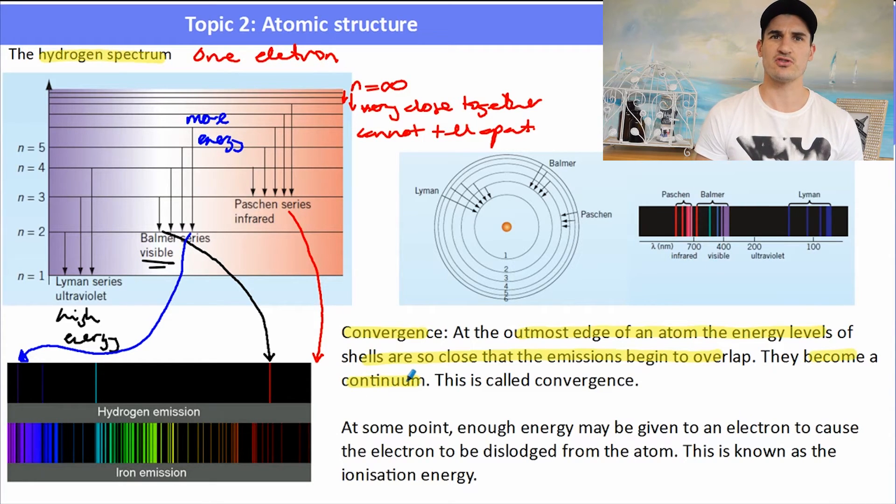Convergence only occurs at the high energy end of the spectrum. If you look at the hydrogen emission spectrum, you can see that as the lines got closer to the high energy end, they actually get closer together. On the iron spectrum, you can see some of these areas of convergence, and they look just like a big chunk of color.